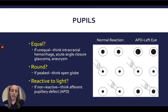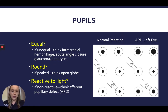You'll also want to check whether the pupils react equally to light. In this diagram, the normal reaction on the left side of the screen shows that shining a penlight in either eye causes both pupils to constrict equally. On the right side of the diagram, the left eye has an afferent pupillary defect — shining the light in the right eye causes equal constriction, but shining it in the left eye does not produce the same constriction.